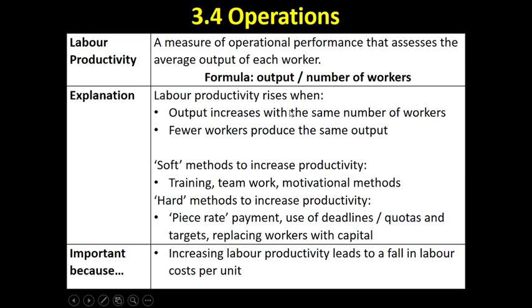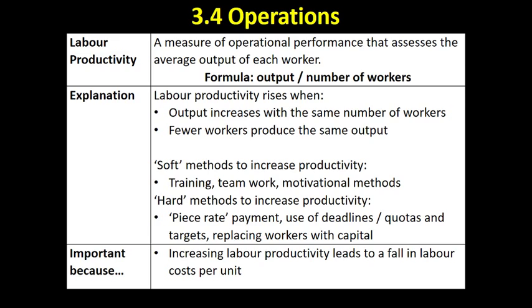Labour productivity rises — rising labour productivity is often a target for a firm. It rises when we increase output with the same number of workers. So if I can make my ten workers the following day produce one thousand five hundred cups of coffee, the labour productivity — output one thousand five hundred divided by ten — equals one hundred and fifty. Each worker has worked a lot harder on that day and produced an extra fifty percent for me.